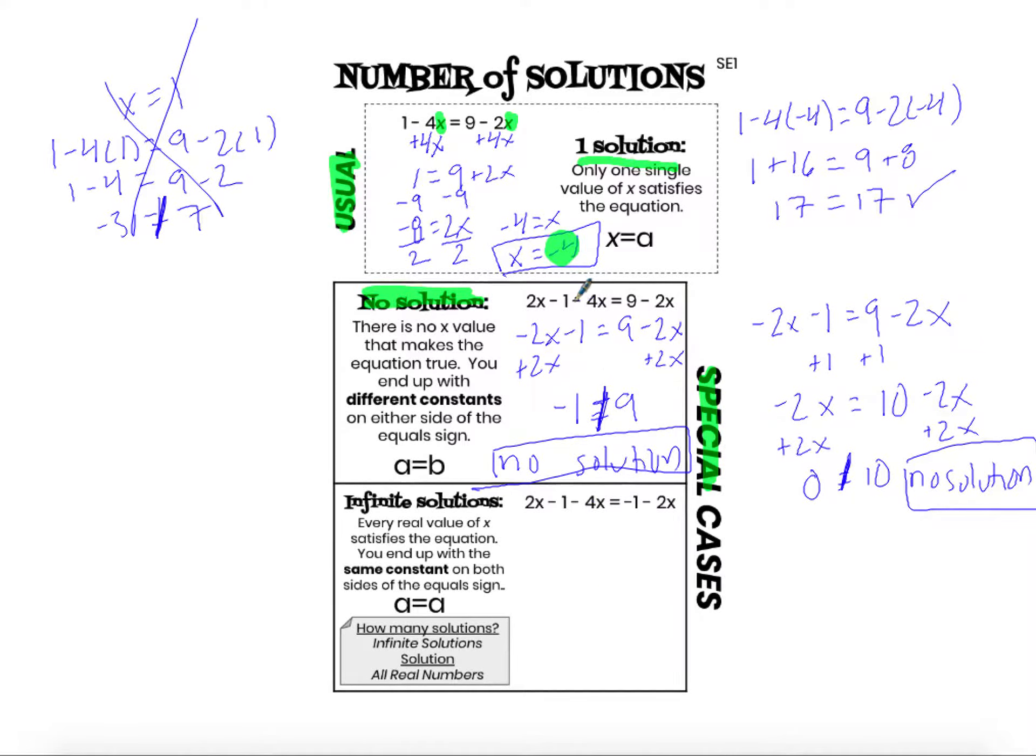Second special case. Let's look at that. So it looks really similar. No distributive property. I'm going to combine like terms and I end up with negative 2x minus 1 equals negative 1 minus 2x.